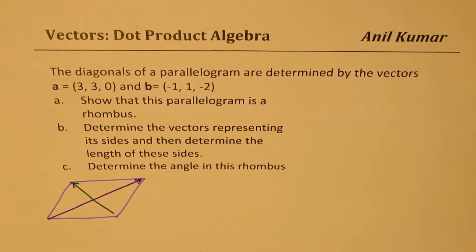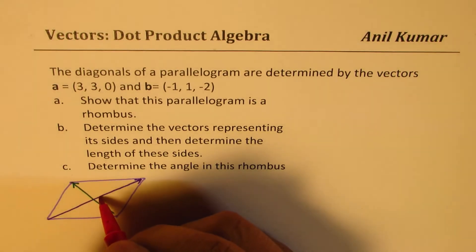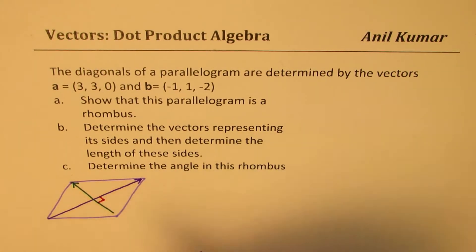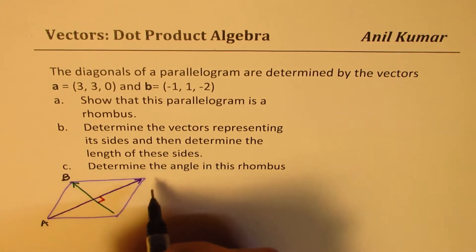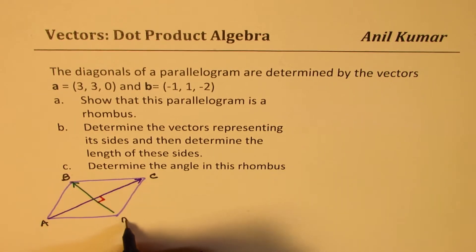If we show that they intersected right angles, that means the dot product is zero, then it's a rhombus. It is already given to us as a parallelogram. So we don't really have to prove that the sides are parallel. It's given to us. So let's name these sides. Let's say ABCD is the parallelogram.